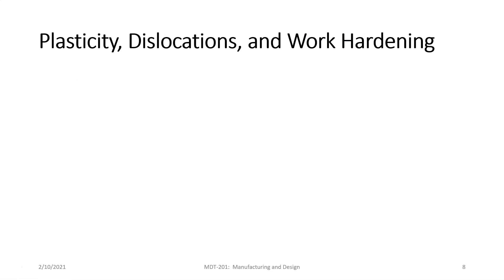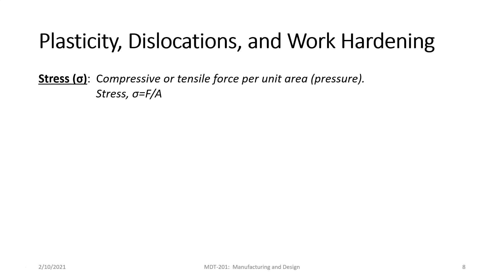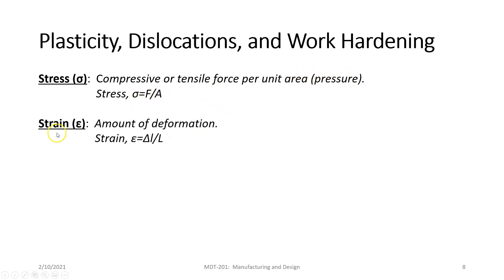Let's talk about plasticity, dislocations, and work hardening. These things occur during a bending operation. Stress — from the stress-strain curve — is the compressive or tensile force per unit area, or pressure. Compressive means we're compressing the material; tensile means pulling it apart. It's force divided by area. Strain is the amount of deformation — how much it's stretching.